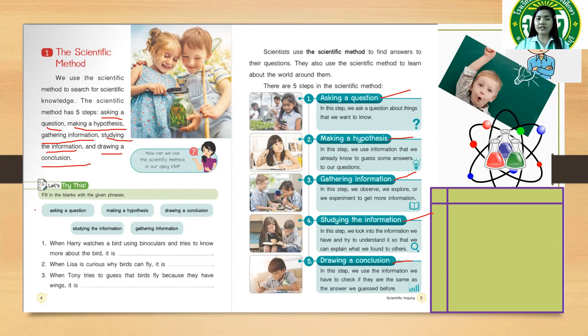So let's move on to your activity. The instruction is: fill in the blanks with the given phrases. Okay, so we have here the choices. For example, number one: when Harry watches a bird using binoculars and tries to know more about the bird, it is... All right, so what scientific method is that? Very good. It is gathering information.